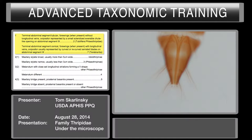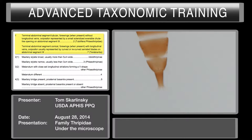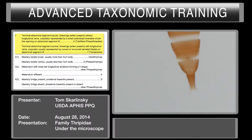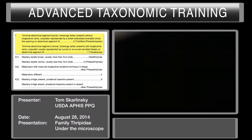You'll notice that there's a gap right up in this area. So in Phlaeothripidae — the Tubulifera — we have the cone, and you'll also notice that there's no slit in it in the center, especially on the venter. So we'll go ahead and focus in on the venter.